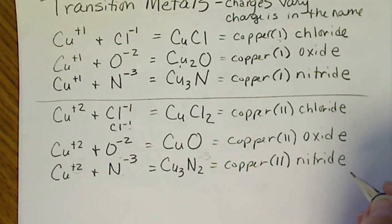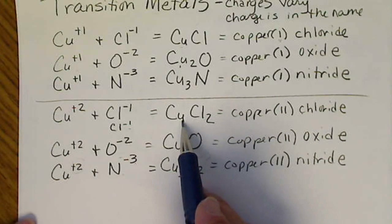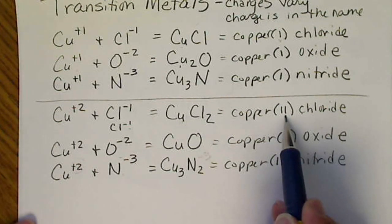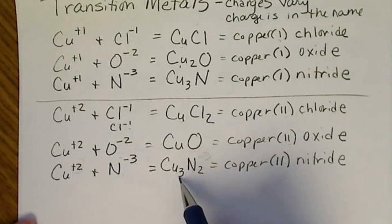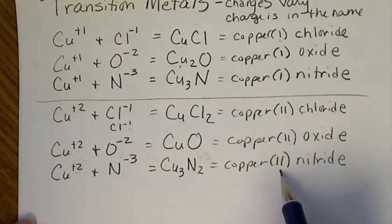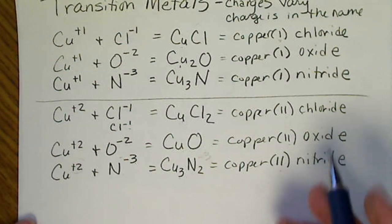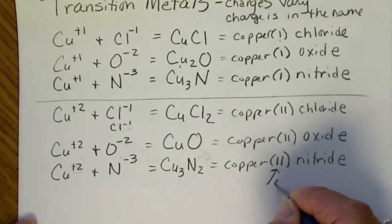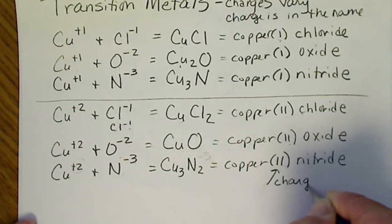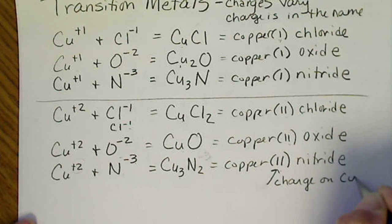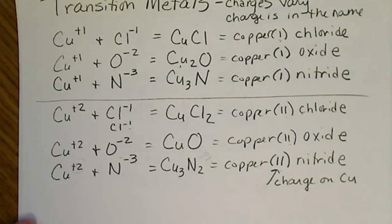This gets confusing. Because there's only one copper here, but we call it copper 2. And there's only one copper here, and it's named copper 2 in here. There's three coppers, and it's still named copper 2. So this Roman number is the charge on the copper. It's not how many coppers there are.